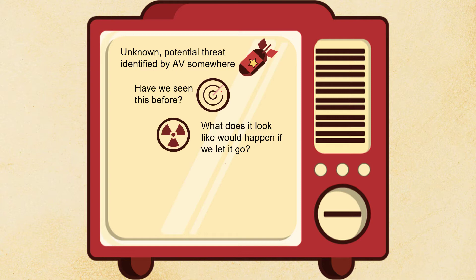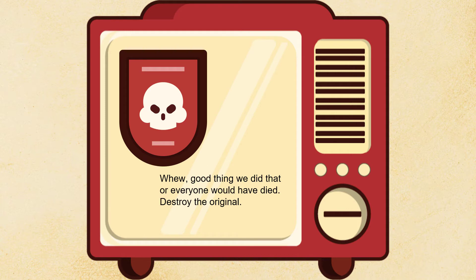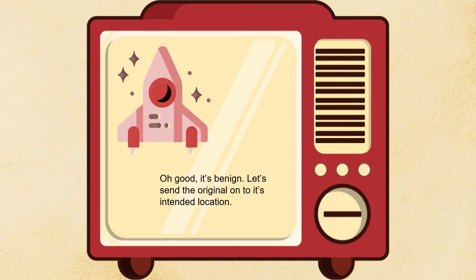And if we still say this looks malicious, then we say: let's detonate a copy in a controlled environment. This is where a sandbox takes a file and puts it in a VM, and it runs actions on it — things that a user would do, like clicking on it and opening the file. The sandbox will advance and go backwards through time, click on random places in the screen, watch what happens with all these interactions, and then make a verdict. Your verdict could be: good thing we did that — destroy the original. Or your verdict could be: it's benign, let's send the original on to its intended location.